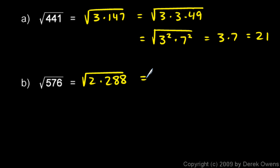And 288 can be divided by 2. So let's write this again. This is 2 times. This thing, 288, will factor as 2 times 144. So this is the square root of 2 squared. That 2 times 2 is my 2 squared. And then the 144 is a 12 squared.